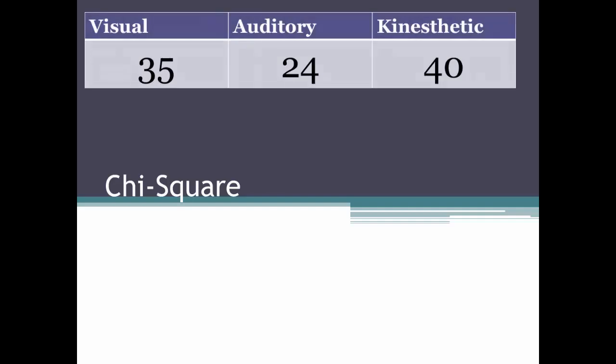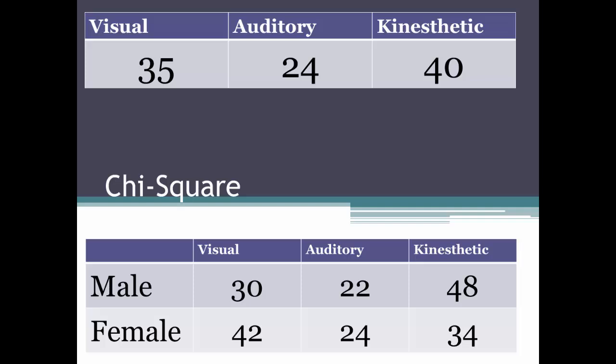In the last video, we calculated a one-variable chi-square on learning styles. We wondered if there was a dominant learning style. But now you're interested in whether there is a difference in how men and women learn. Now you have two variables, so you need to calculate a two-variable chi-square.